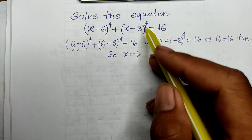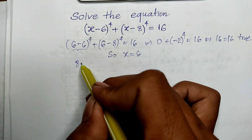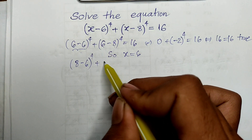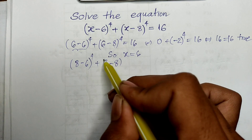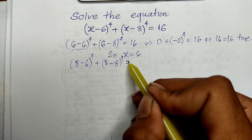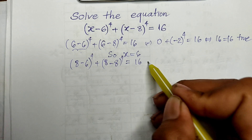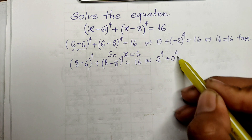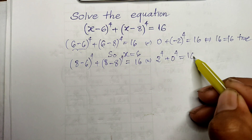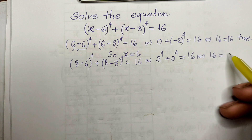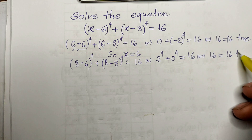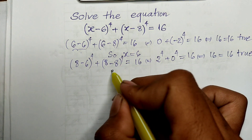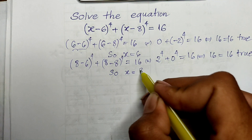If I replace h by 8, we get (8 minus 6) to the power 4, which is 2 to the power 4, plus (8 minus 8) to the power 4, which is 0 to the power 4. So we get 16 plus 0 equals 16, which is true. So h equals 8 is also a solution.